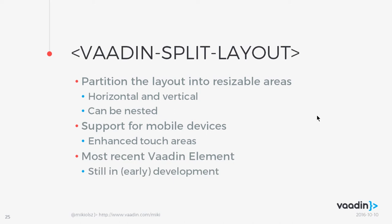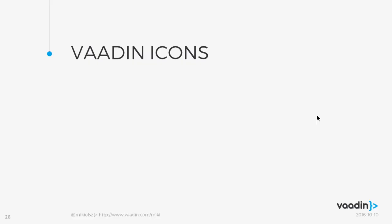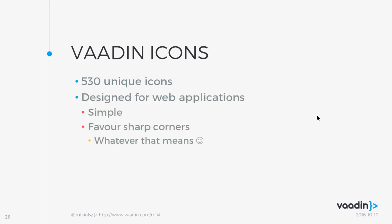Split Layout is the most recent Vaadin element with the currently released version 0.1 — quite fresh, with more features expected as the component matures. Finally, we have Vaadin Icons: not a web component as such, but used within web components. It contains well over 500 icons with new ones added regularly, designed for web applications favoring sharp corners. From personal experience, it's a surprisingly huge boost in UX and overall look and feel.